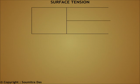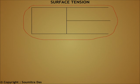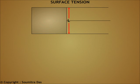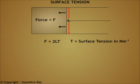To find out surface energy, we make an arrangement of thin wire like this. This part may slide. A film of lather is introduced in this portion. Let the length of this wire be L. The force acting is 2LT, where T is the surface tension. It is multiplied by 2 because there are two surfaces in a film.